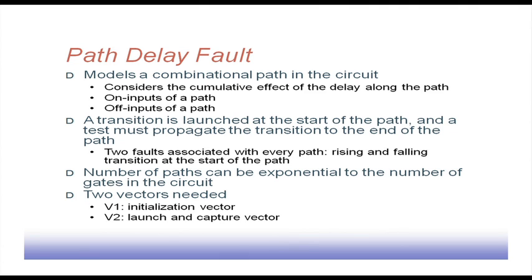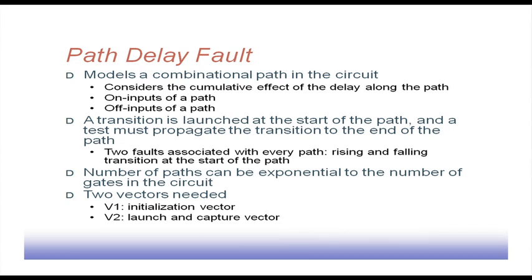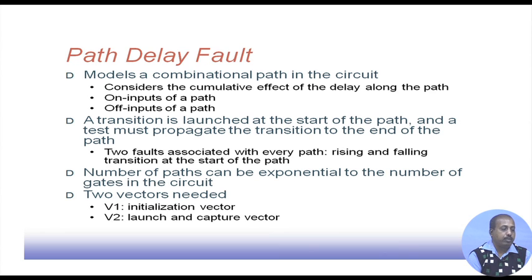The number of paths can be exponential to the number of gates in the circuit. From the primary output, if we backtrack to the primary input, there are innumerable paths, and as circuit size grows the number of paths increases. If there is a fan-out somewhere in the circuit, the number of paths increases even further. We need two types of vectors for testing individual delay faults: one is called the initialization vector and the other is called the launch and capture vector.